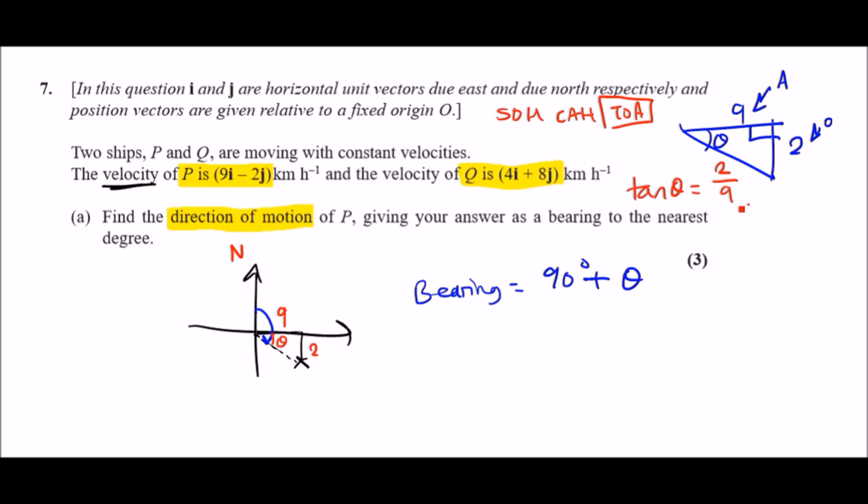All you want to do is tan inverse this. Make sure your calculator is always in degree mode - don't worry about degree or radians yet, but make sure it is in degree mode. Then tan inverse the solution and you should get 12.5, so theta is 12.5 degrees.